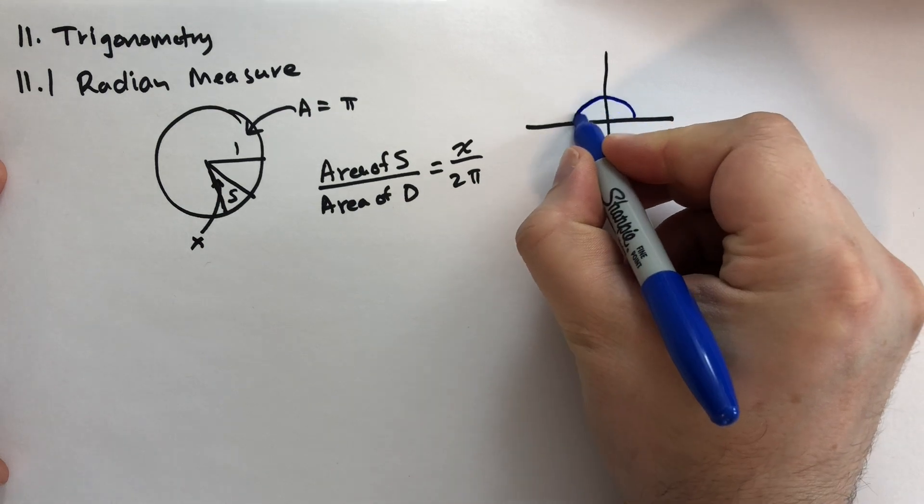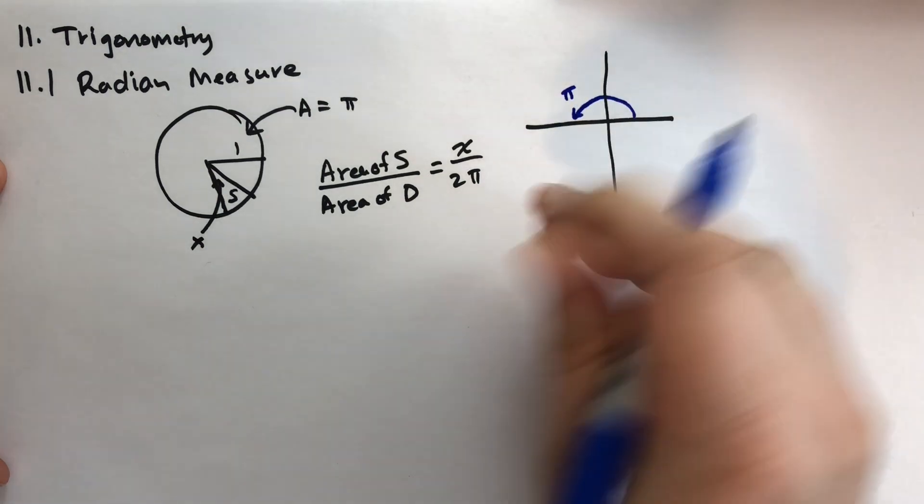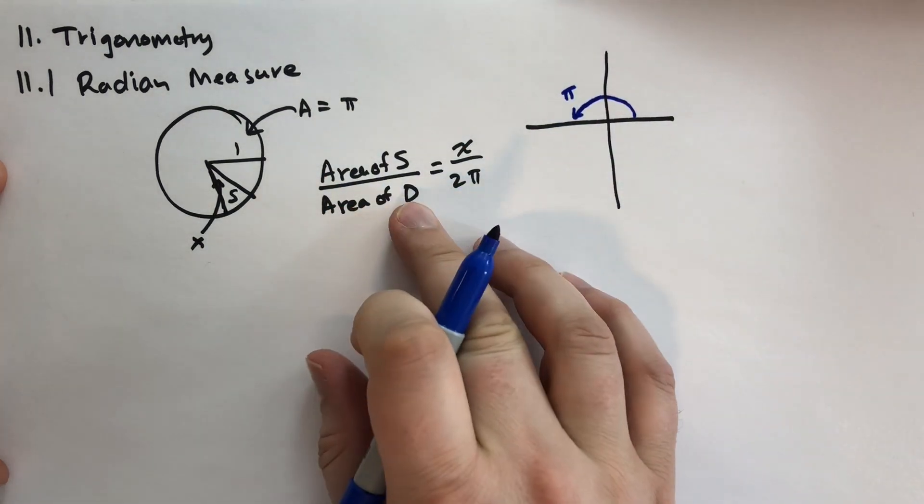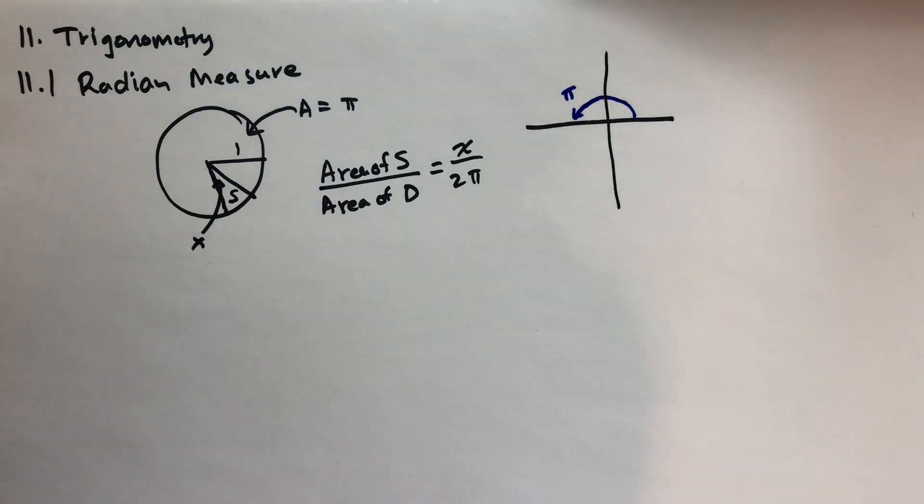So if we go pi radians, that's half a circle, right? Because pi over 2 pi would be half of the area. So the same as 180 degrees.